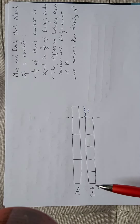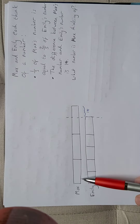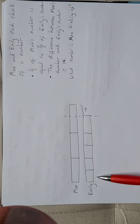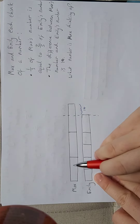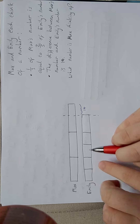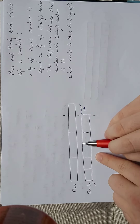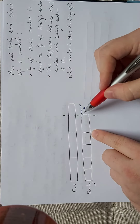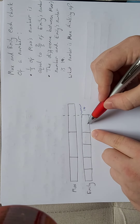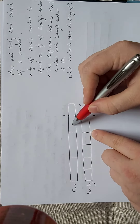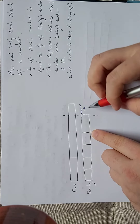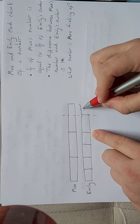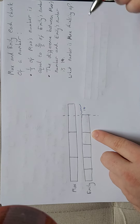A third of Max's number is equal to two-fifths of Emily's number. These two-fifths are equal to that third. This last fifth is equal to half of Max's last third, so the difference of 14 would correspond to the remaining fifth.